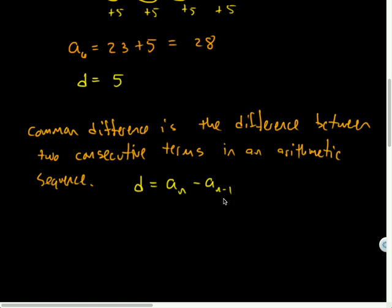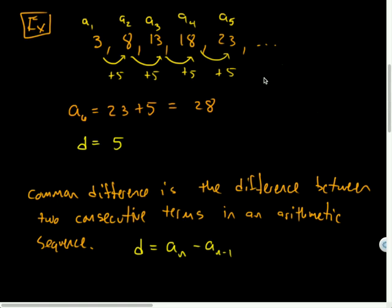So arithmetic sequences are not the only kind that there are. There are many different kinds of patterns that can exist. But today we're specifically going to focus on the ones that have repeated addition or repeated subtraction. And once I know the common difference, then it kind of unlocks the pattern, where I can find the sixth term, the seventh term, the eighth term, and so forth.